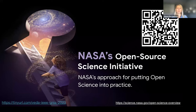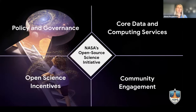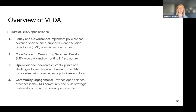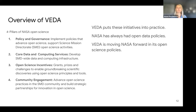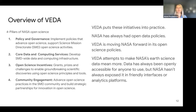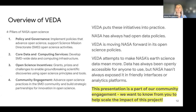VEDA is NASA's Earth Science Division's contribution to the open source science initiative at NASA, and there are four pillars: policy and governance, core data and computing services, open science incentives such as grants and prizes, and community engagement. VEDA puts these initiatives into practice - it has always had open data policies and is moving NASA forward in its open science policies. VEDA attempts to make NASA's Earth Science data mean more. Data has always been openly accessible, but NASA hasn't always exposed it in friendly interfaces or analytics platforms.